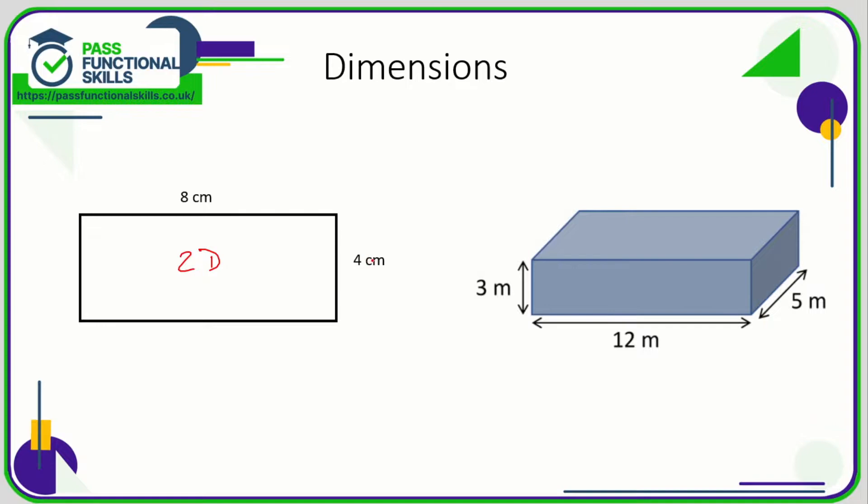The area is going to be these two dimensions multiplied together, and the perimeter is going to be all of the dimensions including the opposite sides added together as well.